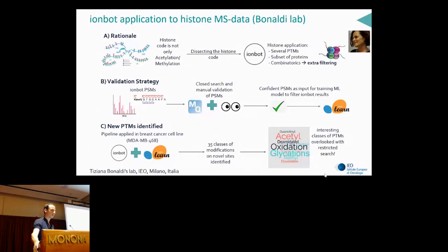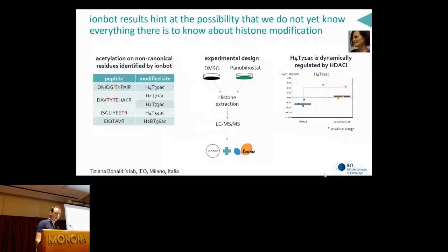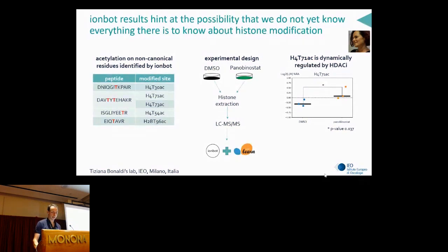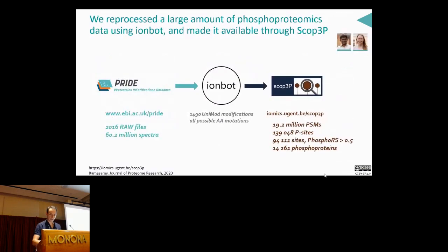Another collaboration with the Bonaldi lab in Milan at the European Institute for Cancer Research: looking at histones. With an elaborate validation strategy, they found a new modification — threonine acetylation. They showed preliminarily that using an inhibitor of histone deacetylases (panobinostat) causes accumulation of this modification, confirming it's real and responds to the expected biology. Hey presto — a new histone modification, a new potential epigenetic regulator, courtesy of IonBot.